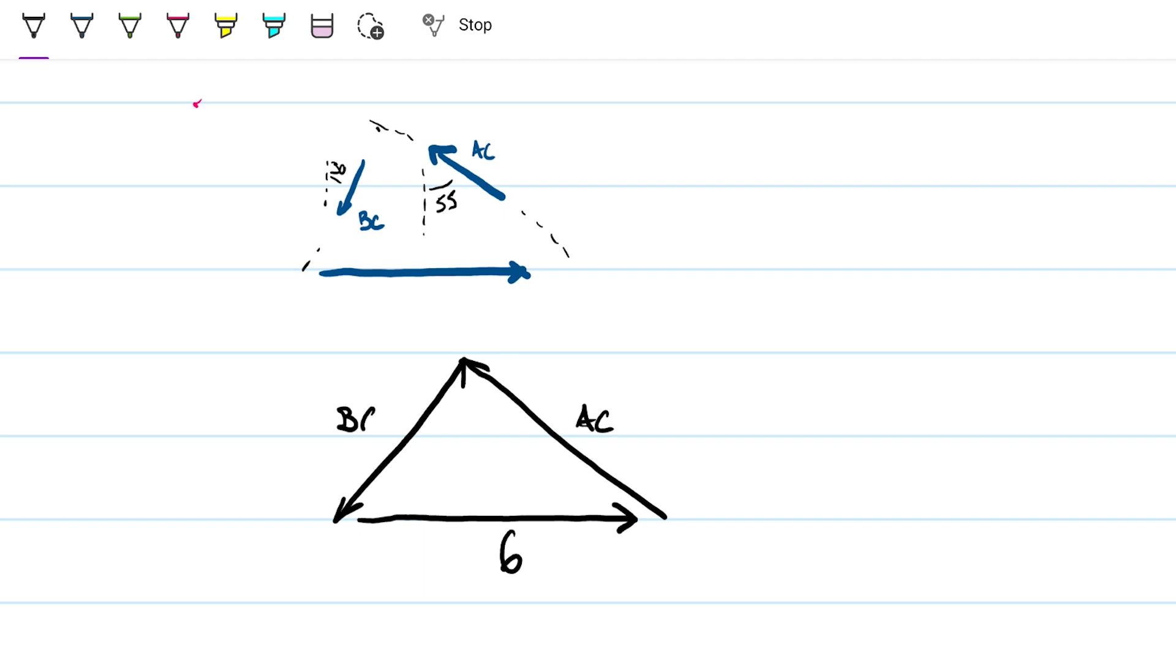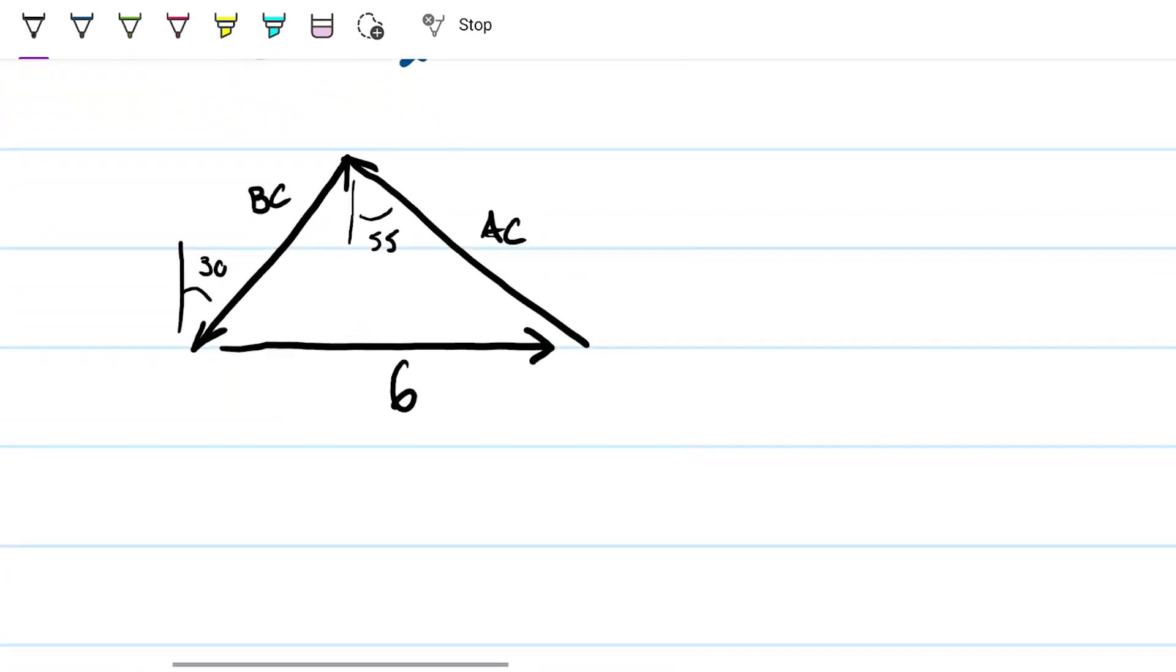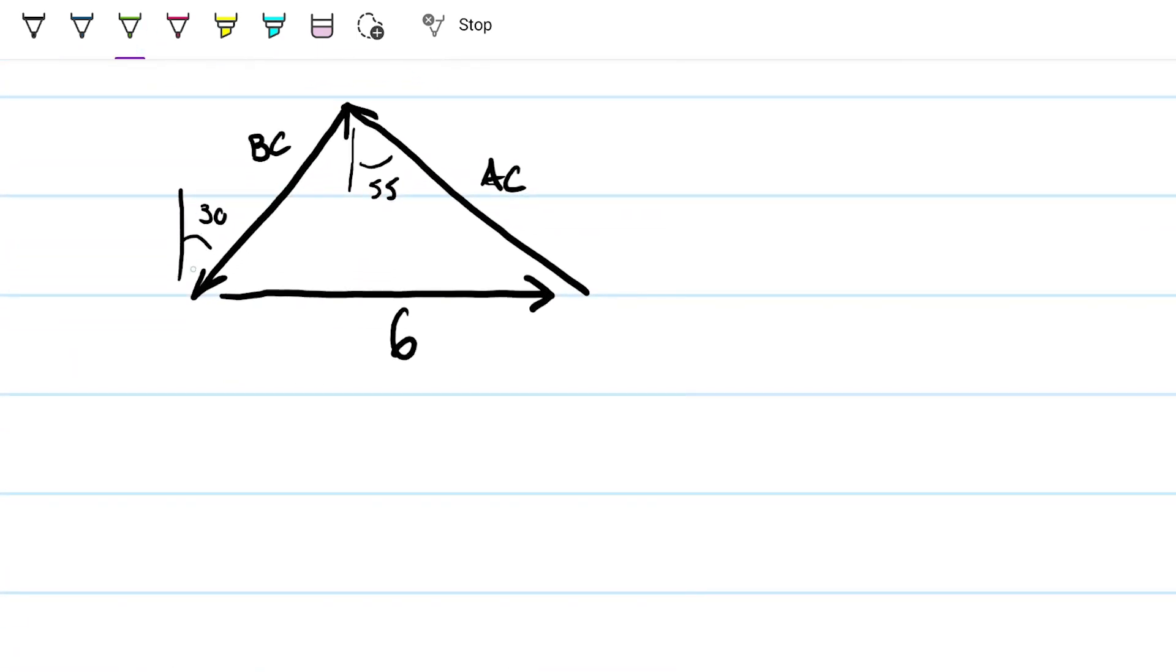This is my AC, this is my BC. What do we know? We know this is 30, and we know this is 55. So what I'm going to do now is I'm going to find out the angles. If this is 90 here and that's 30, then this here has to be 60. If this here is 55 and this is 90, then this here has to be 180 minus 90 minus 55, which is 90 minus 55, which is 35. So this is 35. So 180 minus 35 minus 60, which is 90 minus 5, which is 85.